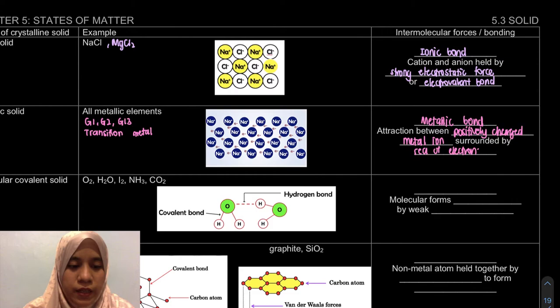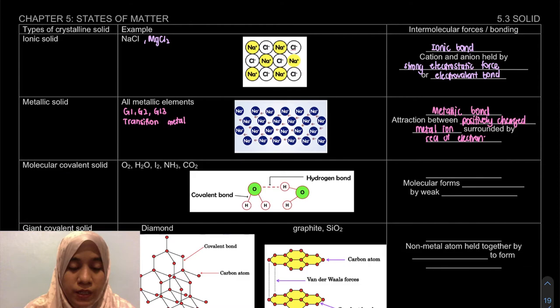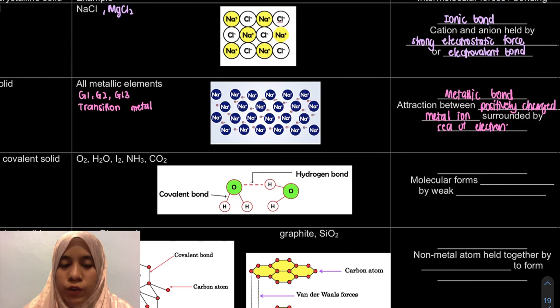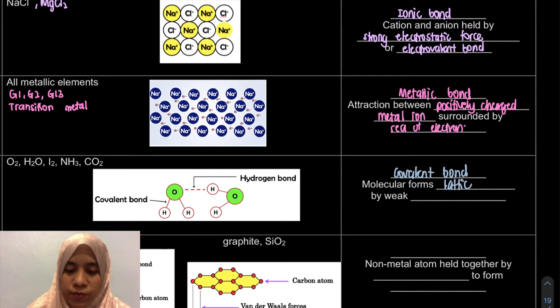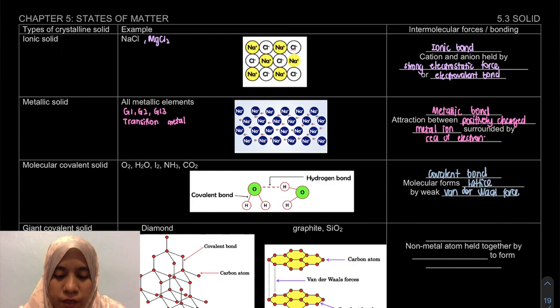Next example is molecular covalent solid. This is our covalent. Examples are O2, H2O, I2, ammonia, carbon dioxide. What is it for molecular covalent solid? It is held by covalent bond. While the molecules form lattice - lattice means its arrangement - lattice arrangement by weak van der Waals forces. There are also past exam questions asking to explain the type of crystalline solid.